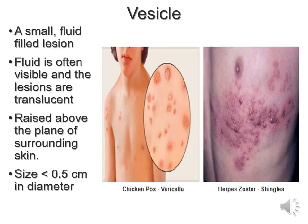A vesicle is a small fluid-filled lesion. The fluid is typically visible because the lesions are often translucent — you can see through them and see the fluid inside. They're typically raised above the plane of surrounding skin and their size is typically less than 0.5cm in diameter. Examples include varicella, also referred to as chicken pox, which is infective and communicable, and herpes zoster or shingles, which is painful.